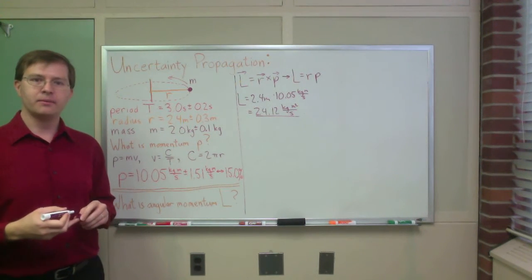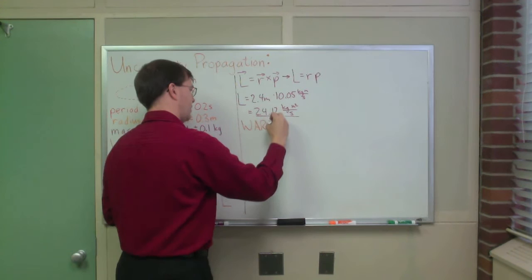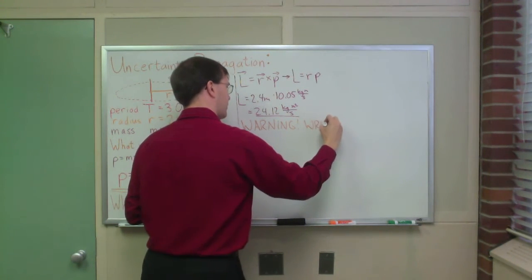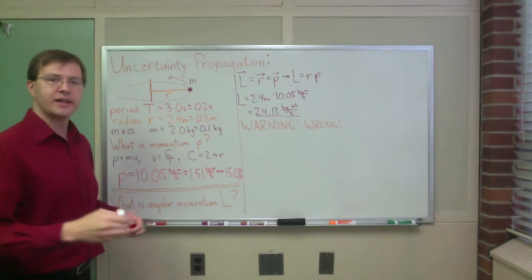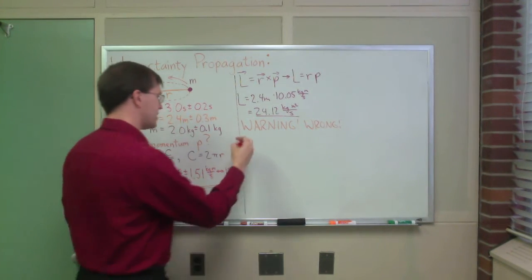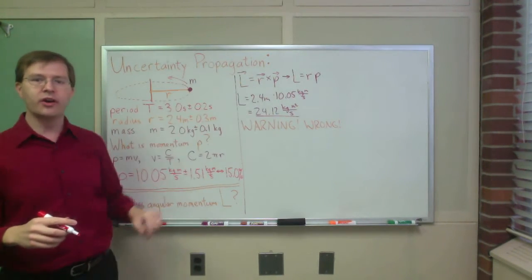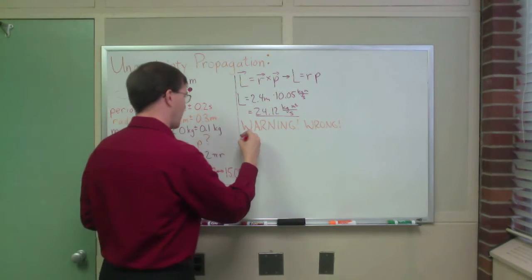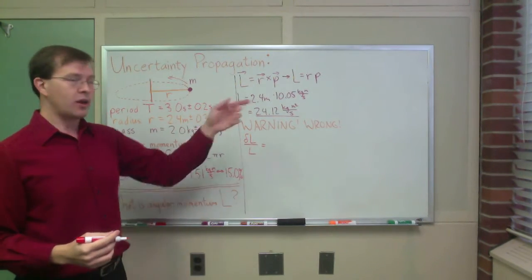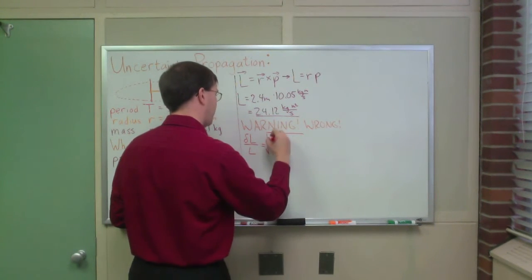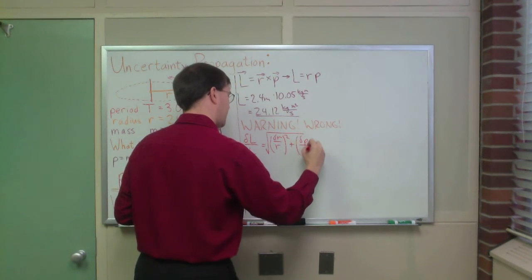Now I want to know the uncertainty in L. This is the part where I'm going to put up a warning, because I'm about to do something that is wrong. Keep your eyes open and see if you can spot the mistake. Since L = r times p is a product, I have to use relative uncertainties. So the relative uncertainty delta-L over L is, by the standard rule for products — adding in quadrature — the square root of (delta-R/R)² plus (delta-P/P)².